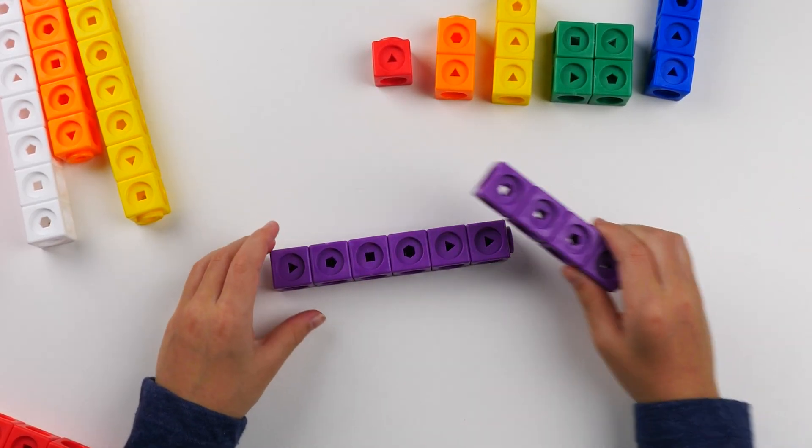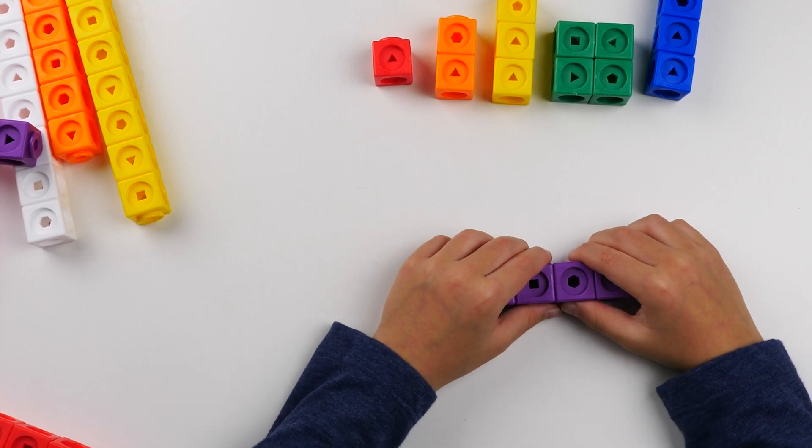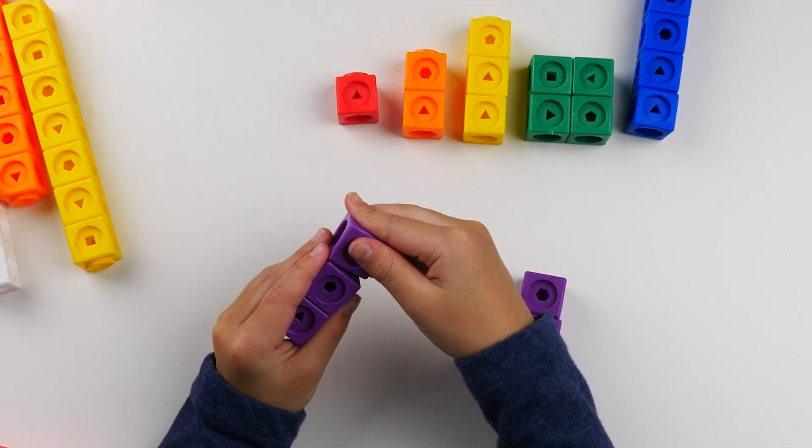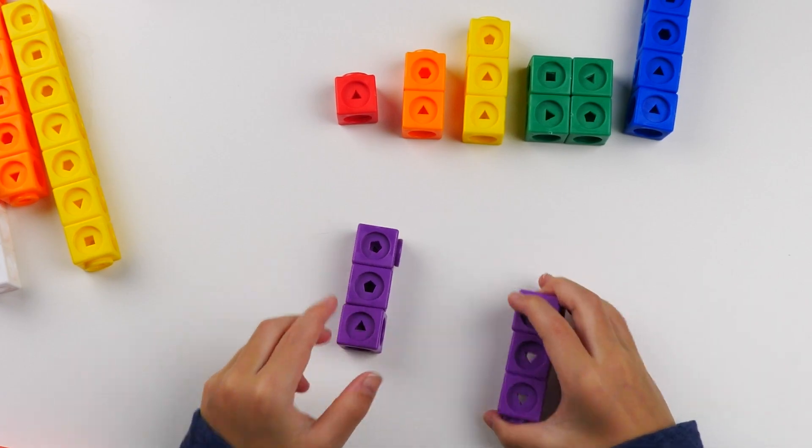Now 6. We are going to make 3 plus 3 equals 6. Let's sound them like the number blocks. 3 plus 3 equals 6.